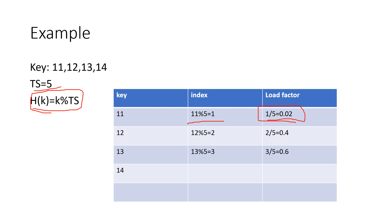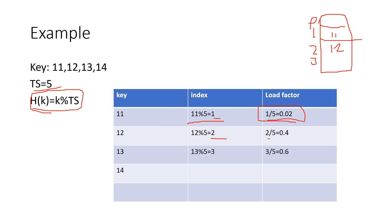Element 11 came and I calculated its index: 11 mod 5 = 1, so 11 is stored at index 1 in the hash table. Then 12 came; index of 12 is 2, so 12 is stored at index 2. Load factor of 12 is 0.4, which is still less than 0.5. Then 13 came; index is 3 and load factor is 0.6. Since the load factor is now 0.6, it exceeds the threshold of 0.5, so we will perform rehashing.